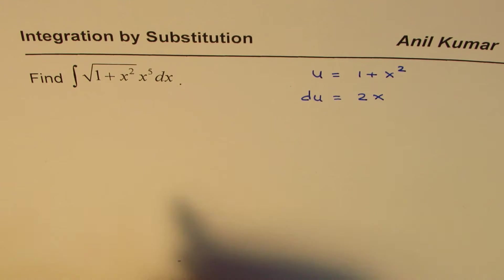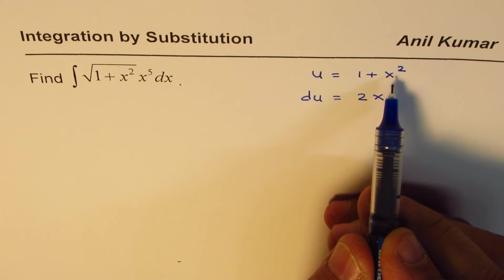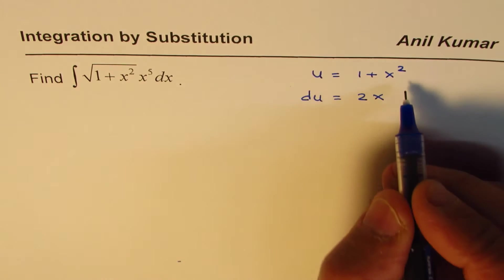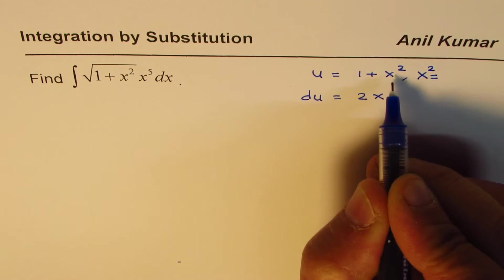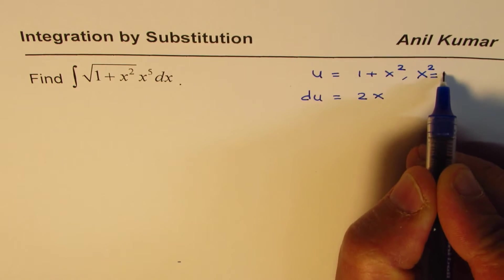Well, what I could do is from here I could write x squared—this will mean that x squared equals u minus 1.